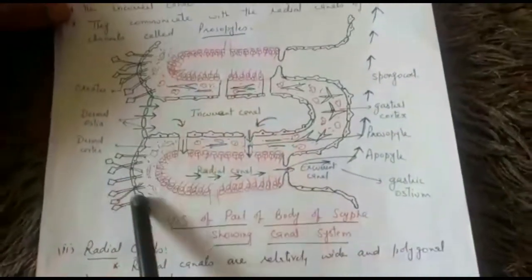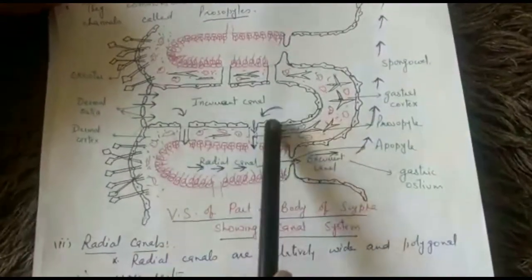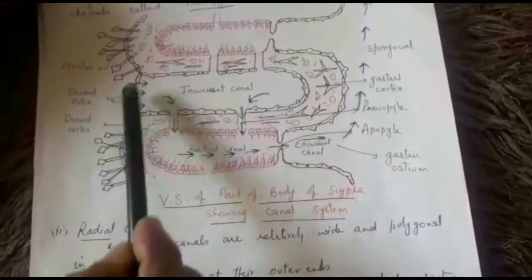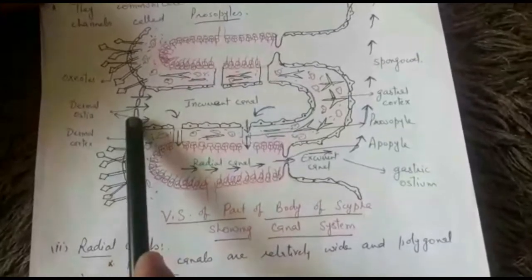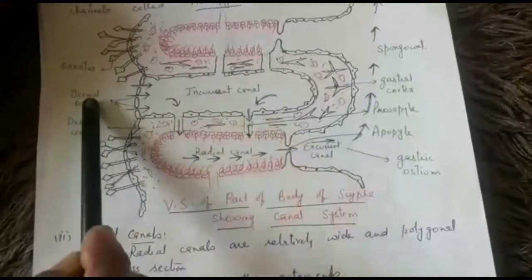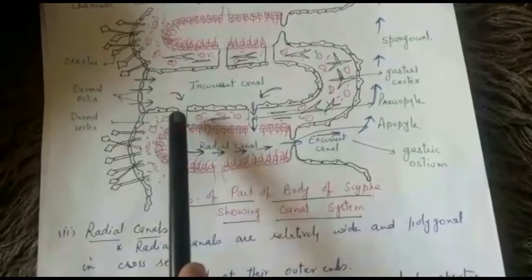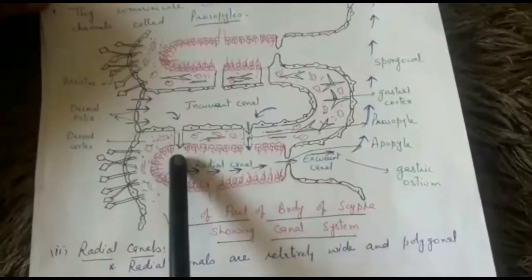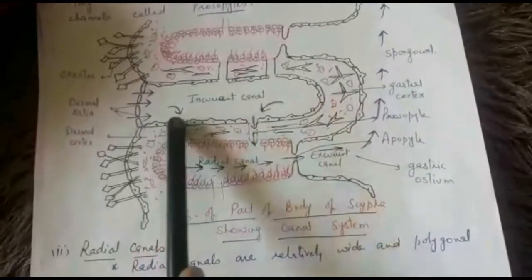On the surface there are alternating elevations and grooves. The inner end of the incurrent canal is closed, but externally it is covered by a membrane on which there are present minute apertures known as dermal ostia. These dermal ostia open into the incurrent canal and are guarded by myocytes. The incurrent canals open to the exterior through dermal ostia on one side, and on the other side they are connected with the radial canals by means of shallow channels known as prosopiles. The incurrent canals are lined by flattened cells known as pinacocytes.